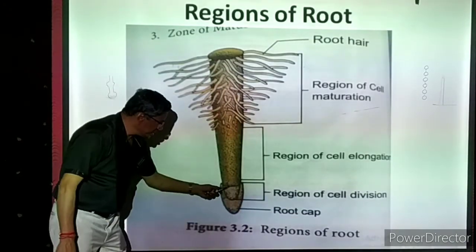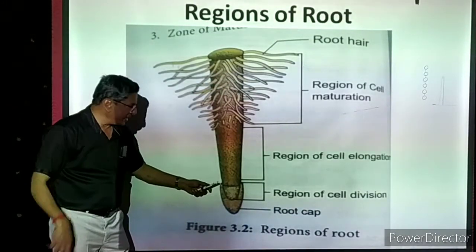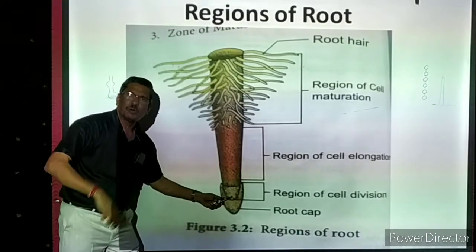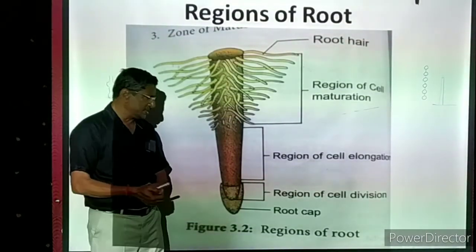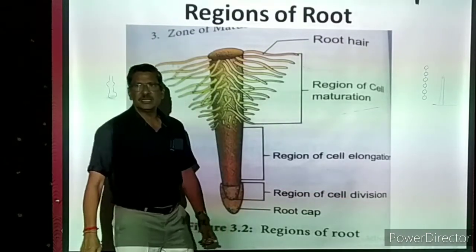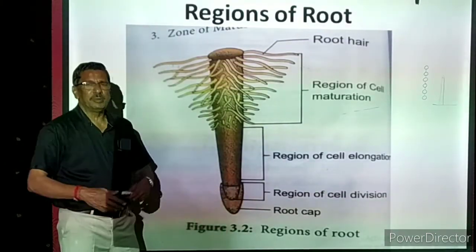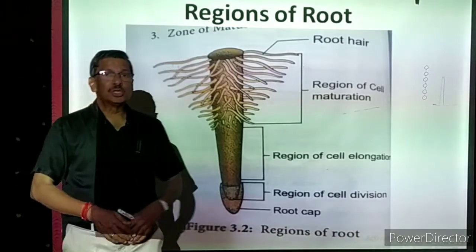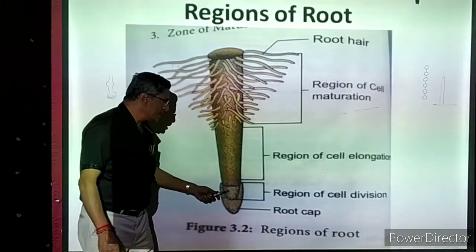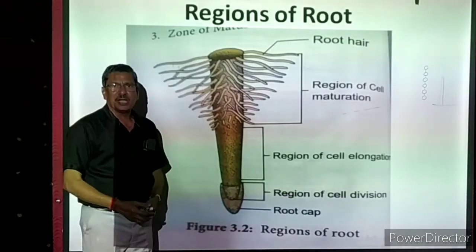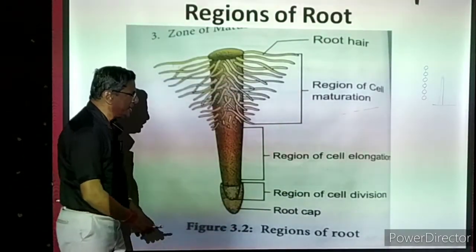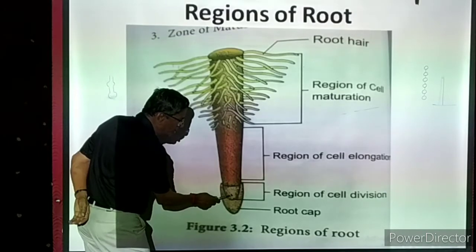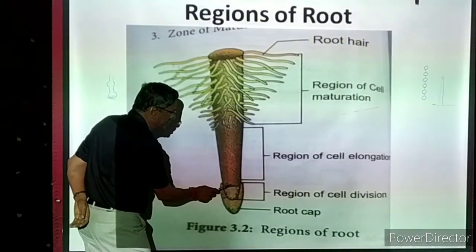The next region is the region of cell division. In this region, the cells are very soft and enormous in number, growing and multiplying by mitosis. Imagine 100 cells multiplying into 200, then 200 into 400 — the cells keep on multiplying. This is called the region of cell division, also called the meristem.